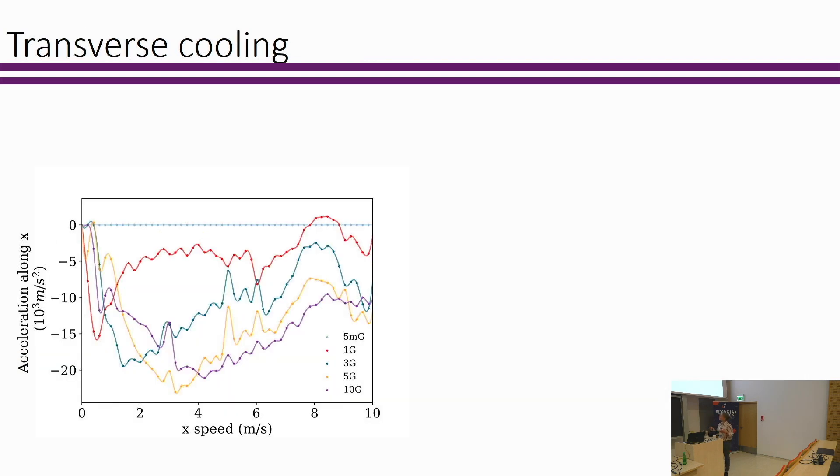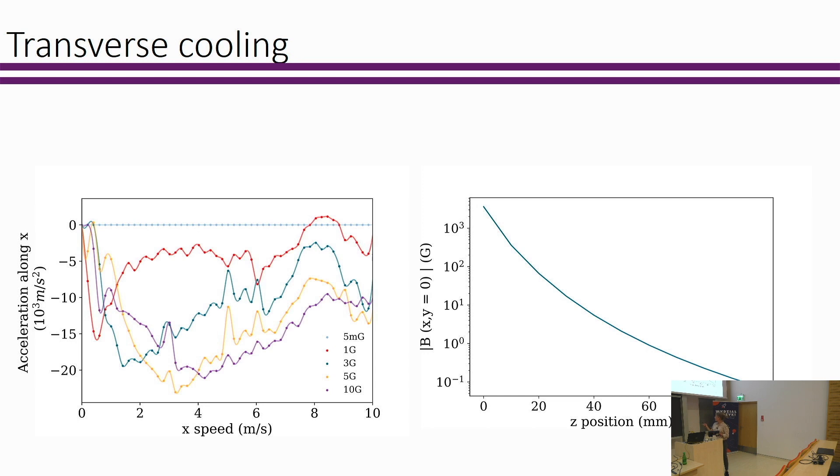We could still maybe gain by collimating the beam afterwards if we want to load into a MOT. Here we solved the optical Bloch equations to look at transverse cooling of the calcium fluoride beam. We tried this for various different magnetic fields, because as I said, our static magnetic field reaches a Tesla. So is this cooling even going to work in the vicinity of the decelerator? If you look at the scalar magnetic field versus distance from the end of the decelerator, it actually drops off pretty quickly. Within three to four centimeters, the magnetic field is in the order of a gauss. So this transverse cooling should work pretty well.